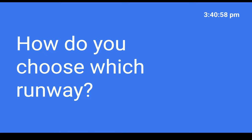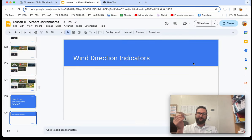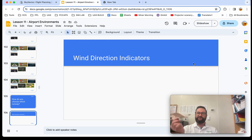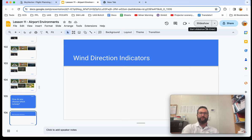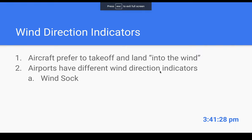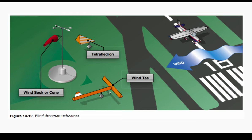How do you choose which runway to use? You should always take off and land into the wind. We get the most benefit from a headwind — our ground speed can be slower while our relative wind is higher, producing more lift. We also have a slower ground speed on landing. To determine wind direction, we use wind direction indicators such as wind socks, tetrahedrons, and wind tees — we'll talk more about those in class.